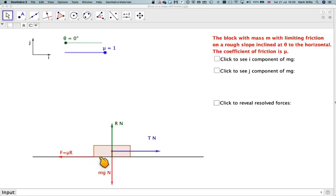depends on the normal reaction of the block with the surface times its coefficient of friction. So hence we get F is equal to mu being the coefficient of friction times R being the normal reaction force.